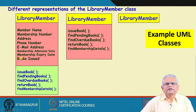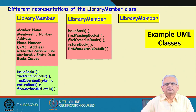Many CASE tools can generate code directly based on this diagram — by a click of a key, they will produce class definitions with attributes defined and method prototypes defined. We will stop here and continue from this point in the next class. Thank you.